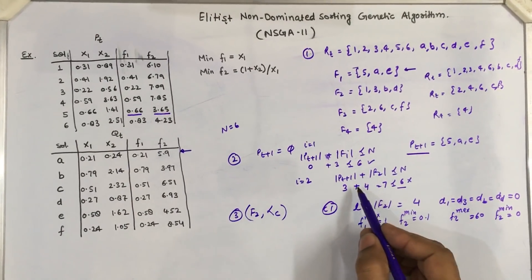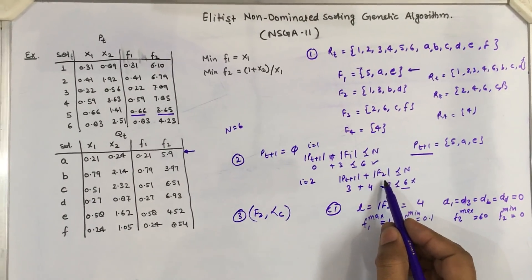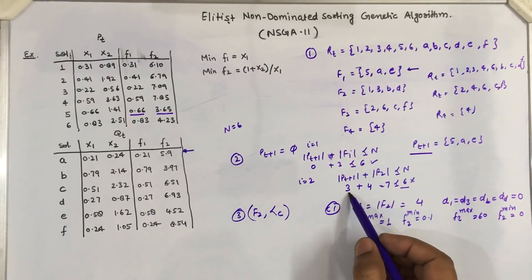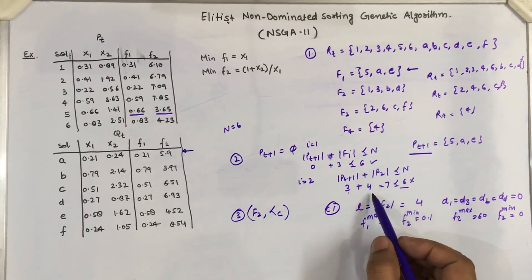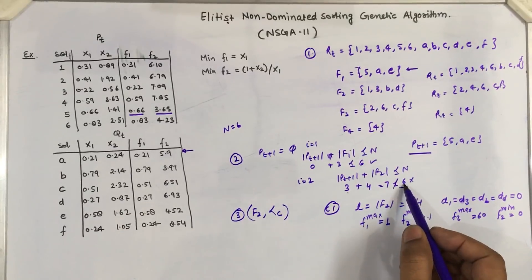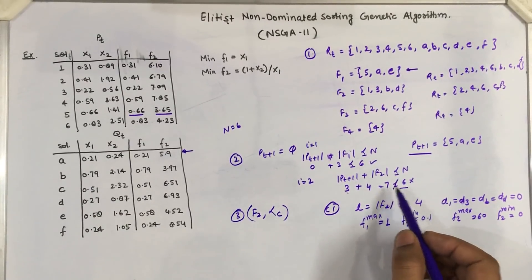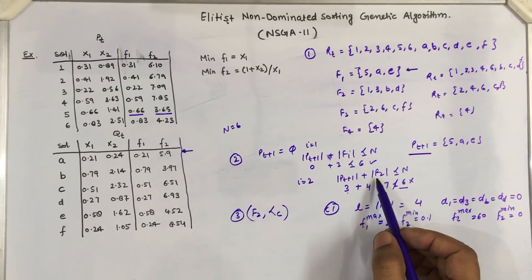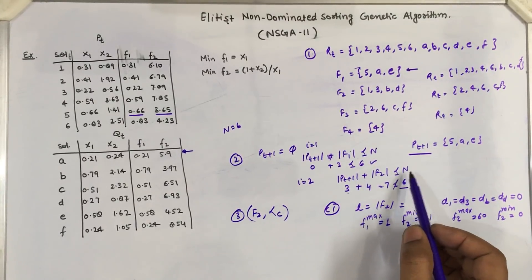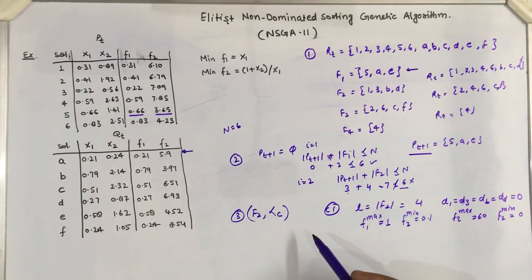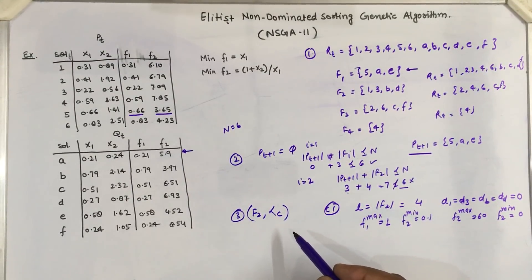The number of solutions in P(t+1) is 3 and F2 has 4 solutions, so the total is 7, which is greater than 6, so the condition is not true. If the condition is not true, we cannot append all the solutions from F2 to P(t+1). We have to apply the crowding selection or crowding distance operator on this set F2.